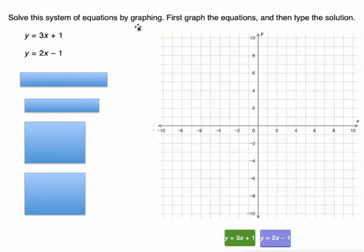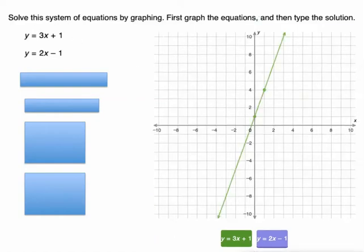So solve this system of equations by graphing. First, graph the equations, then type the solutions. We have to not only know what the solution is, we have to graph them to figure it out. So here's my system. The nice thing is that they are both in slope-intercept form. So I can identify the slope of this first equation as 3 and its y-intercept is 1. That makes it pretty easy to graph.